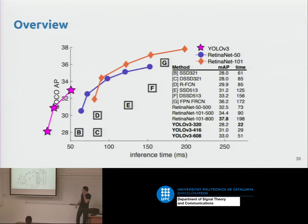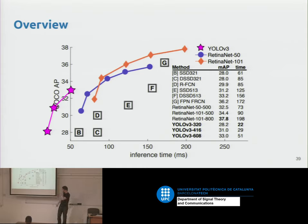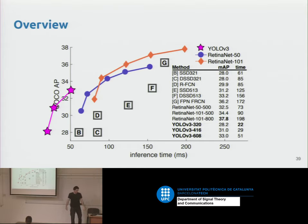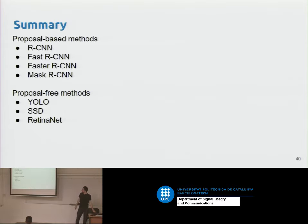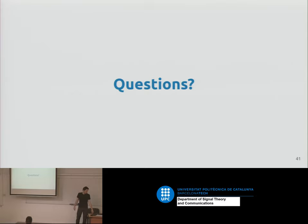As an overview, there are numbers here comparing inference time for YOLO and RetinaNet among others — worth checking if interested. In summary, I explained proposal-based methods and proposal-free methods. If you have any questions I'll try to answer them.